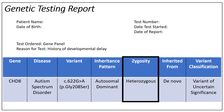Zygosity tells us more information about this specific individual who was tested and their genetic variant, specifically if the variant was found on one copy of the gene or both copies of the gene. You may see heterozygous, homozygous, or hemizygous in this box to help describe this. In this example report, we see the zygosity is heterozygous, meaning the individual has the variant on one copy of the gene.